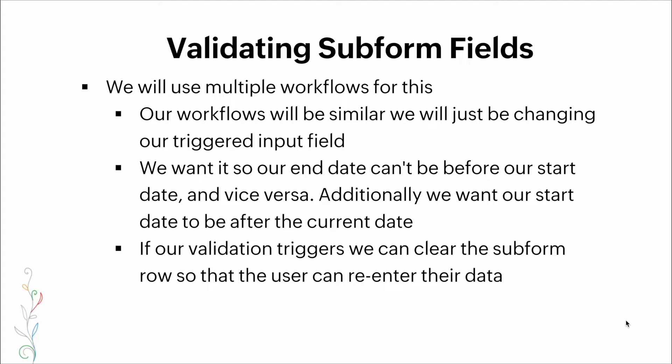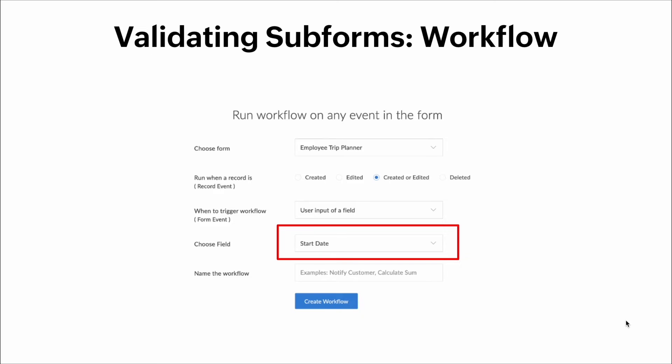For this example we will use multiple workflows — the workflows will be similar, we'll just be changing our trigger input field. What we want is for our end date not to be before our start date, and vice versa. Additionally, we want our start date to be after the current date, and if our validation triggers we can clear the subform row so that the user can re-enter the data.